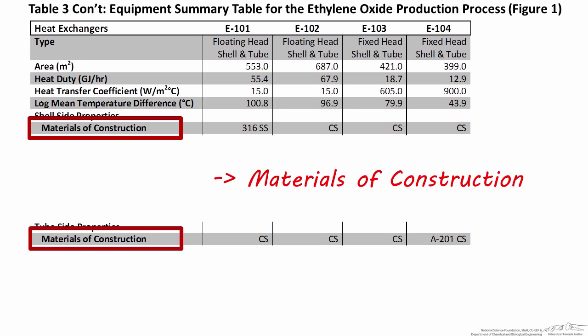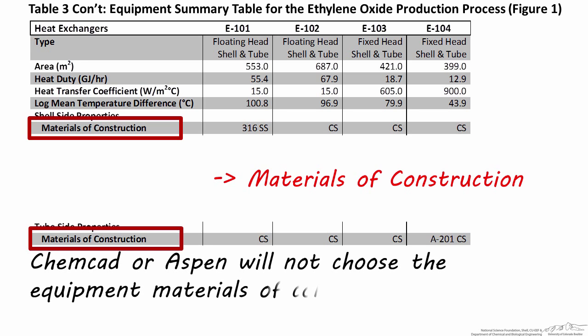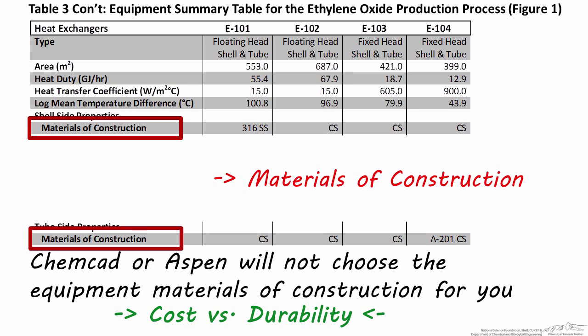Remember that materials of construction are not provided for you by CHEMCAD or ASPEN. You must select the appropriate materials for both the tubes and the shell by balancing cost versus the durability required to withstand the temperature and chemical exposure to the streams.